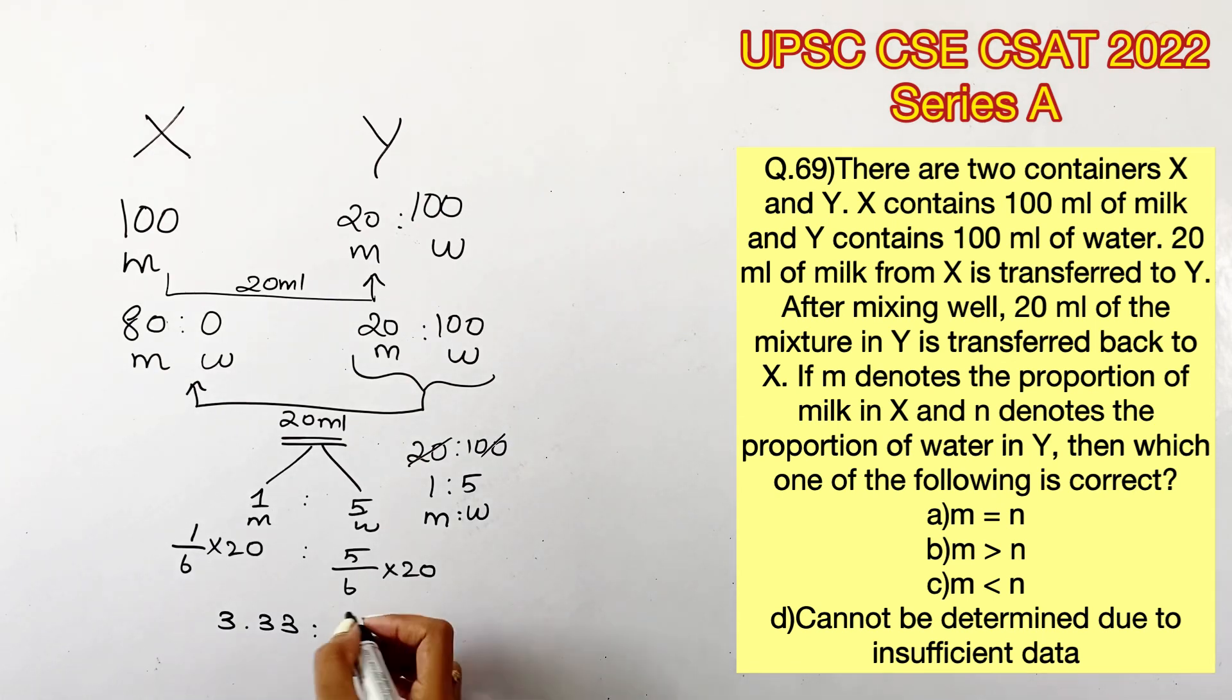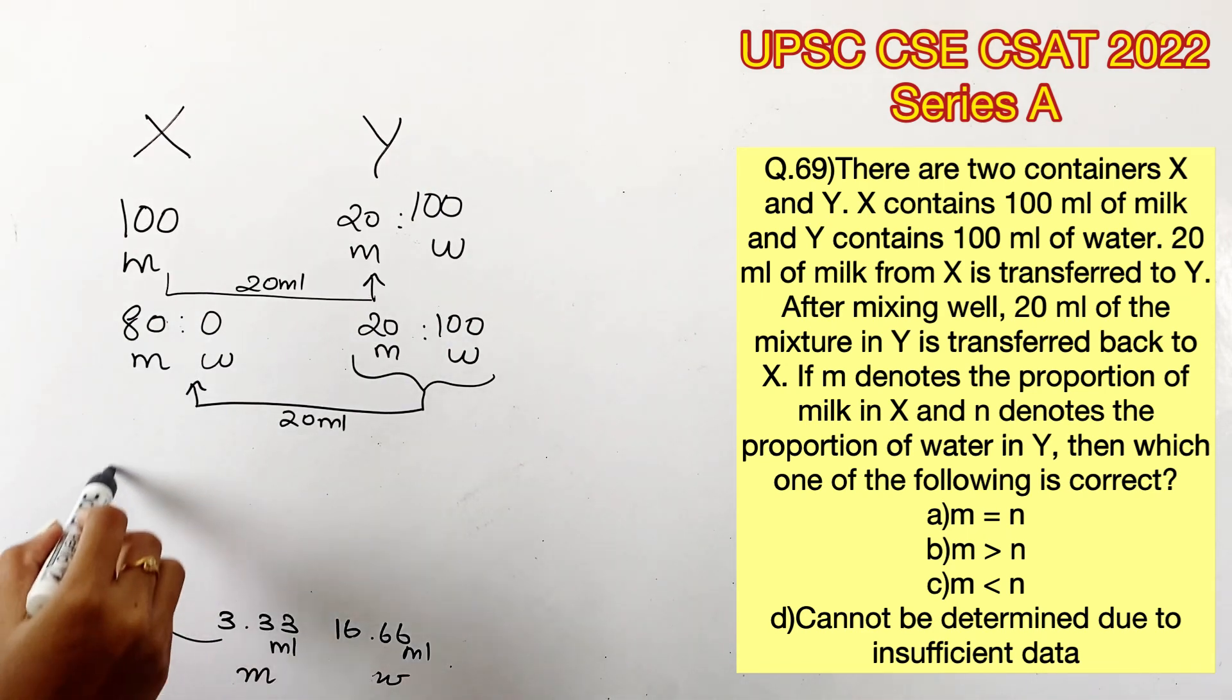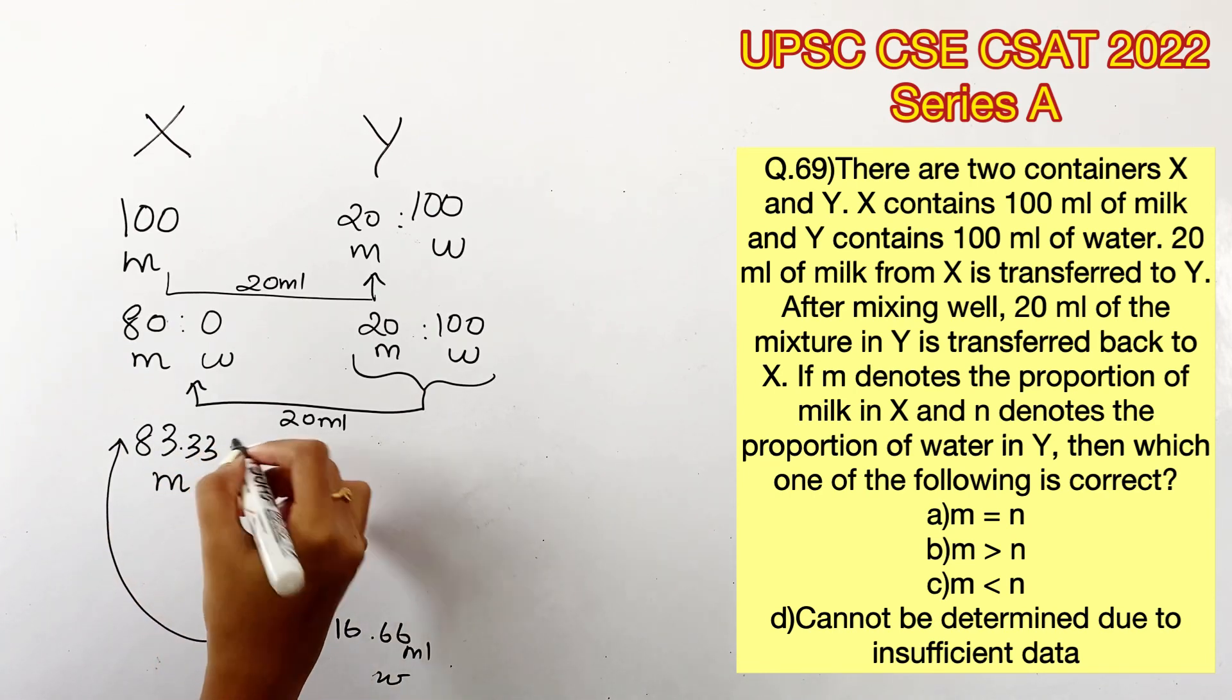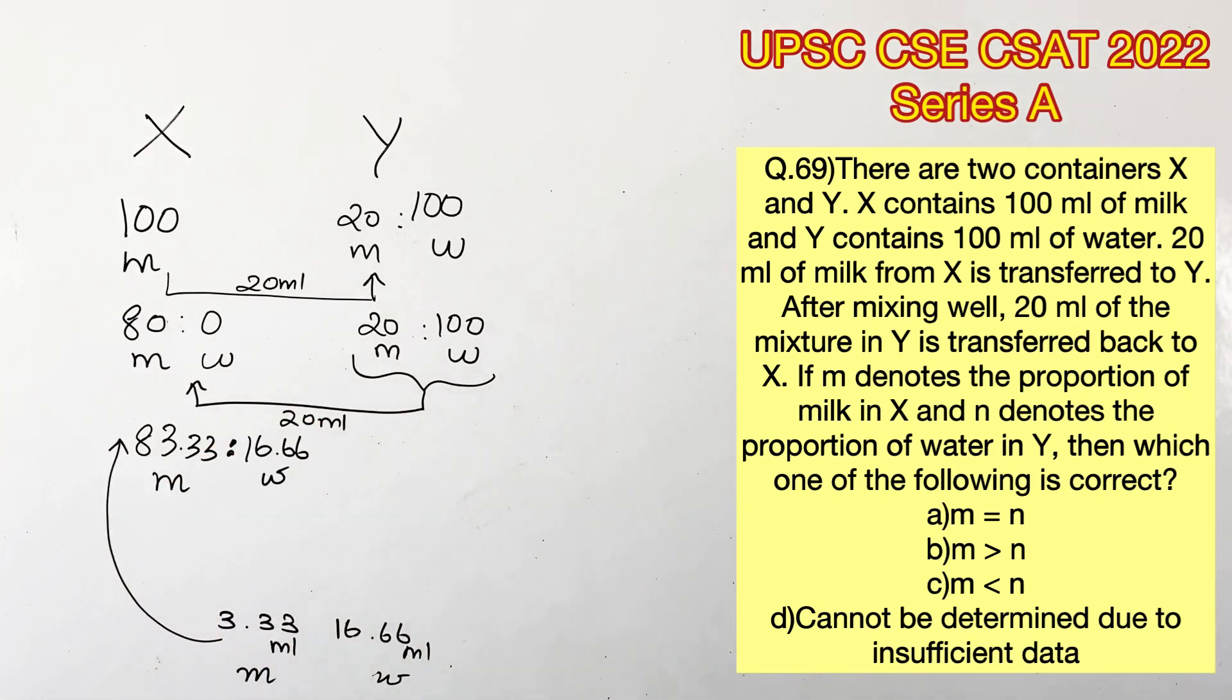So adding these to container X, we get 80 + 3.33, which is 83.33 ml milk, and 16.66 ml water, because previously there was no water in container X.